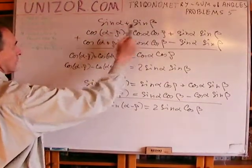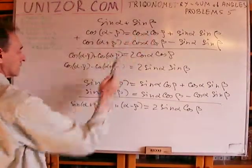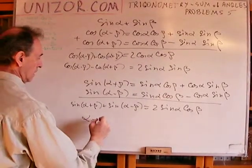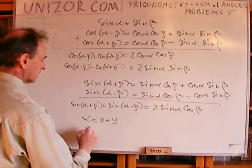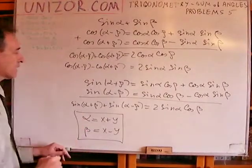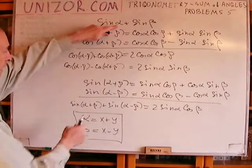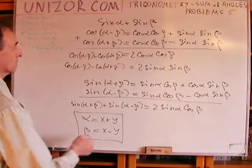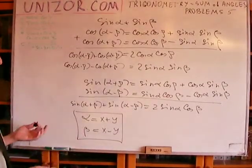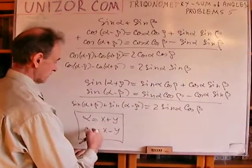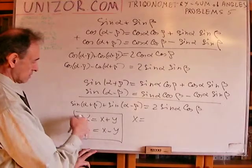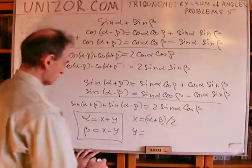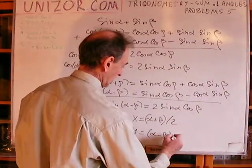We have two sines here, and here we have α and β, while here we have α+β and α−β. So what if I represent α as x+y and β as x−y? Then this equation would look exactly like the product formula, where instead of α you have x and instead of β you have y. From this substitution: x = (α+β)/2, and y = (α−β)/2.